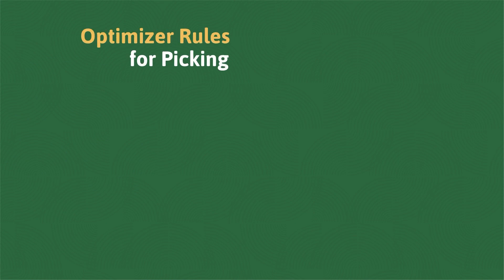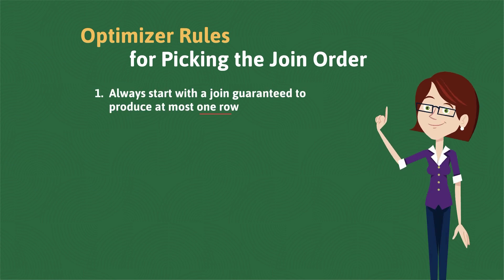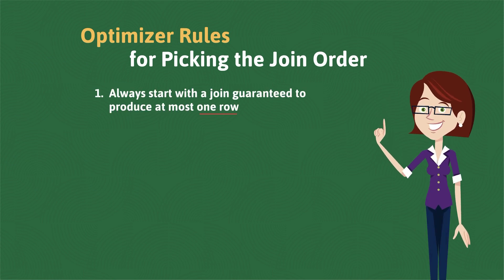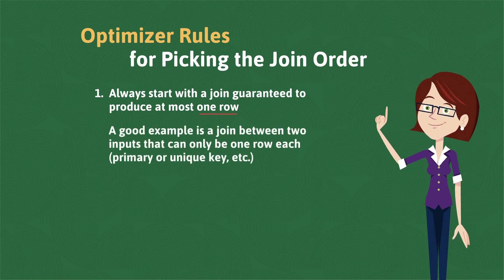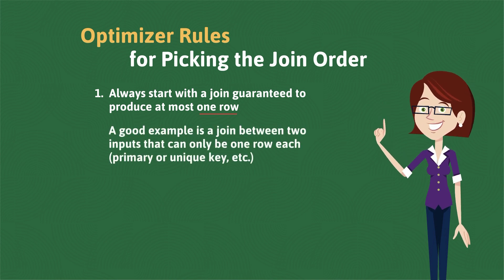The optimizer will always select a join that will produce at most one row as the initial join in the plan. For example, a join between two row sources that only have one row each is a very good place for the optimizer to start. Those types of joins would include things like a primary key lookup where at most one row could be returned, or an index unique scan.